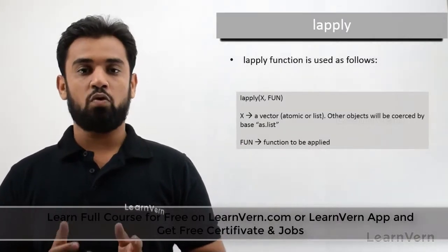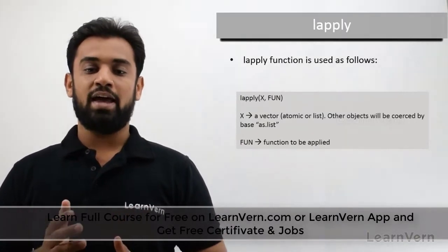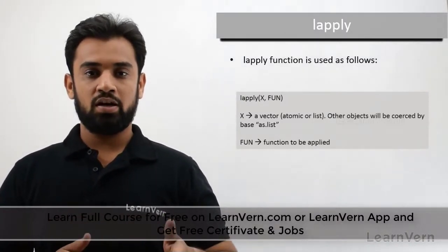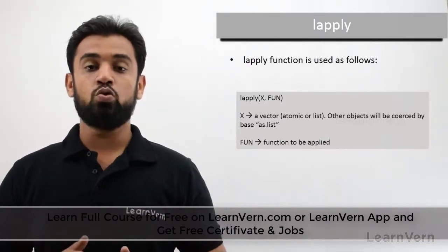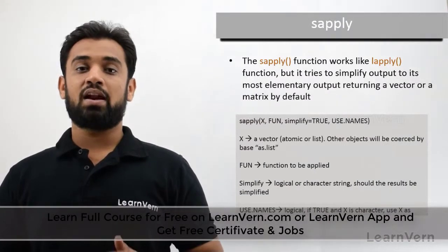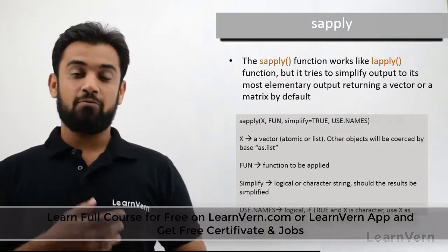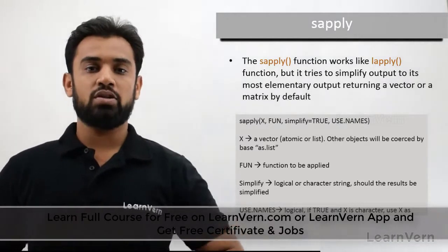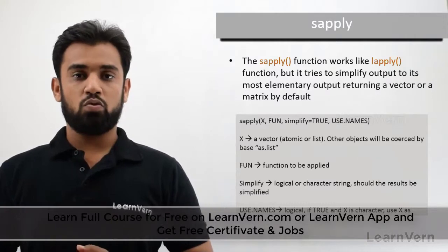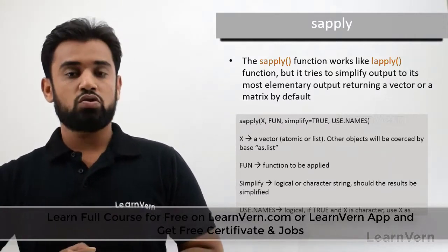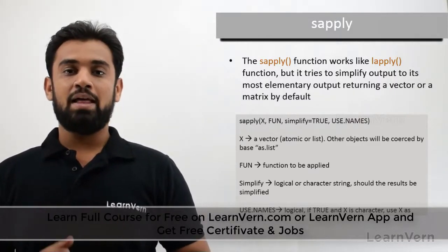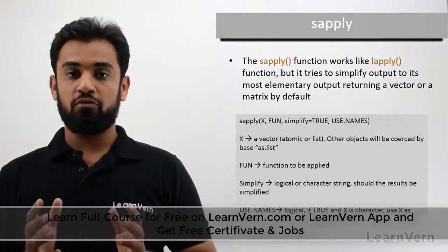If you do not want to return data in the form of a list — but rather want the output to match the input type by default (matrix input gives matrix output, vector input gives vector output) — then you use another function called sapply. sapply is called a wrapper function of lapply. It has four parameters: X, function, simplify equals to TRUE, and use.names. When simplify equals to TRUE, sapply returns output in the default form of the input.